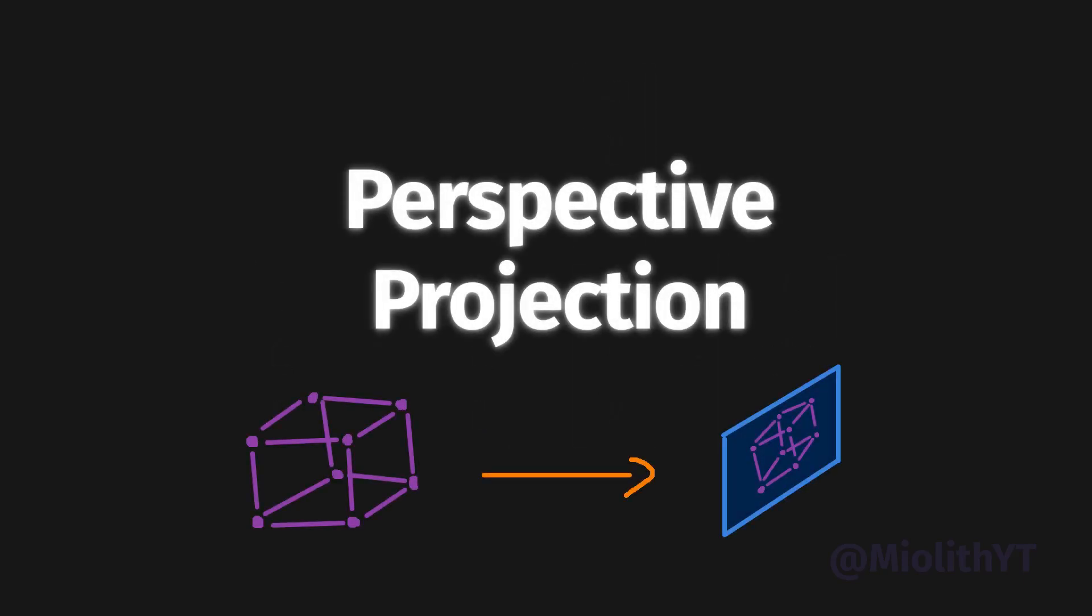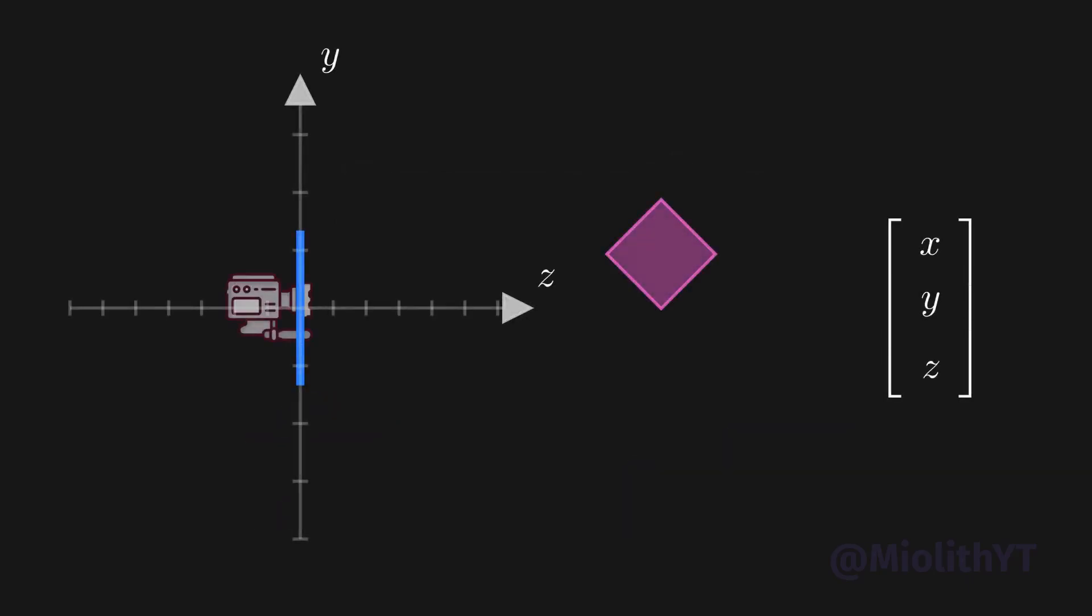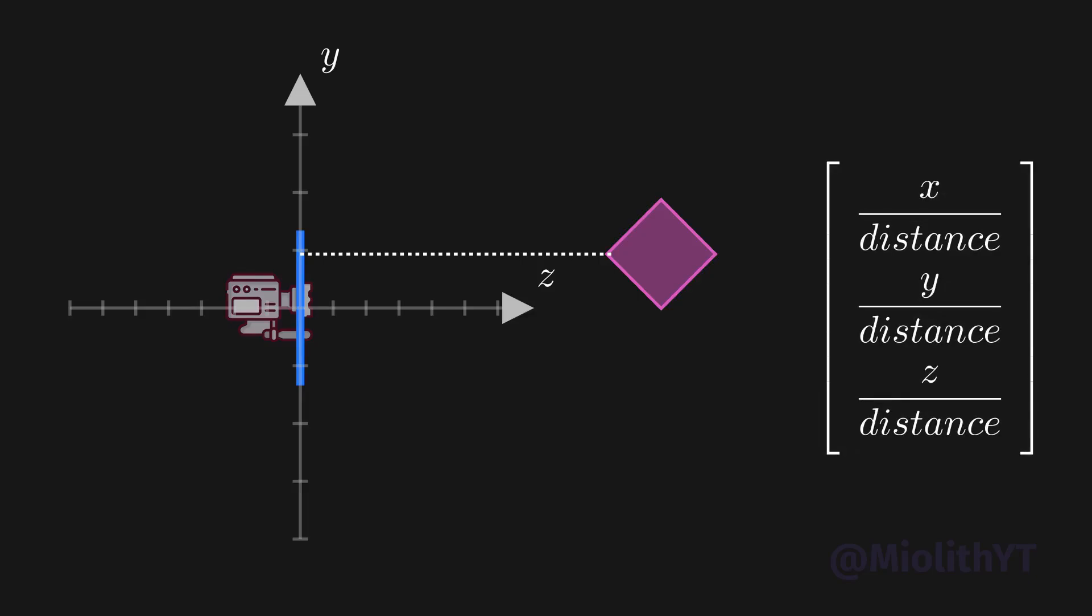This is precisely how we achieve perspective projection. In perspective, you need to downsize objects proportionally to their distance to the viewer. For that, we simply divide the x, y, and z component by their distance from the camera plane, which is often represented by the z coordinate.